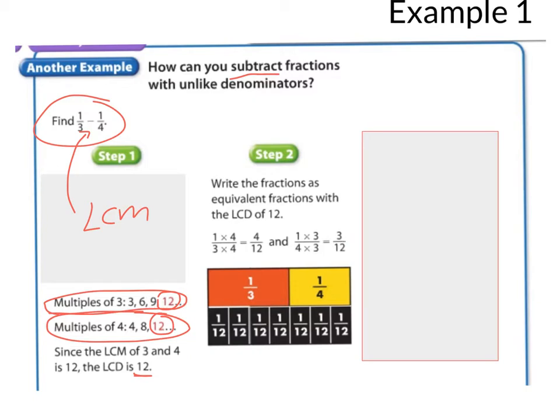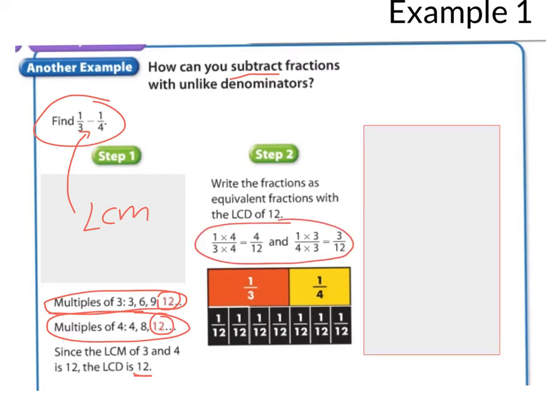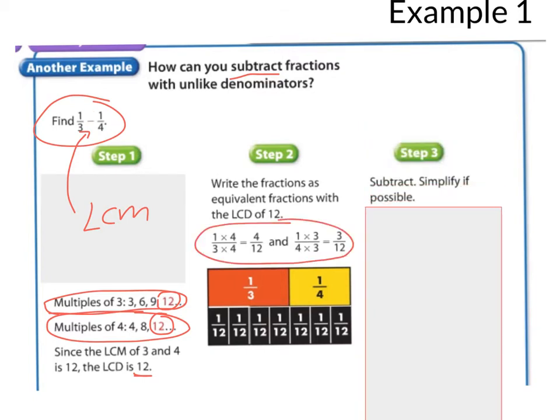Now, I'm thinking, what do I do with these now four-twelfths and three-twelfths? I'm going to look back at the original problem. I see I subtract them. Our last step is to subtract. Simplify if possible. When I subtract four-twelfths minus three-twelfths, I get one-twelfth. I can't simplify that.